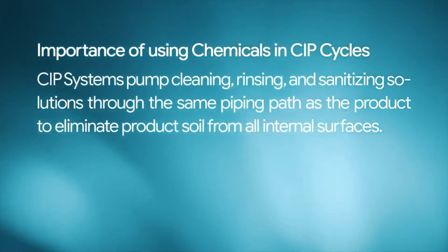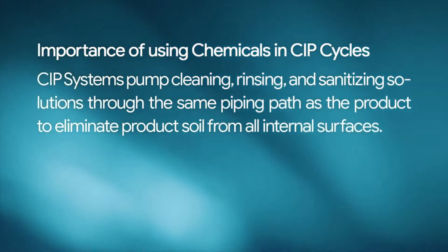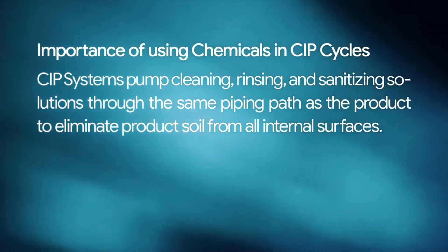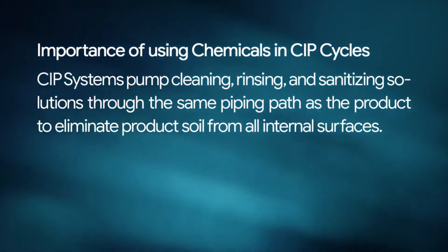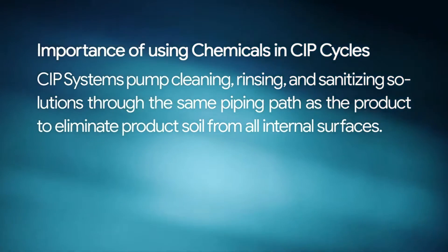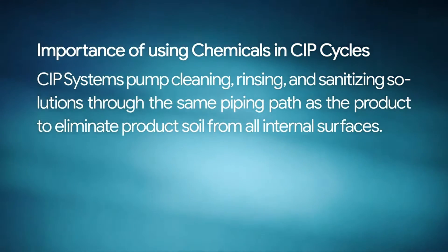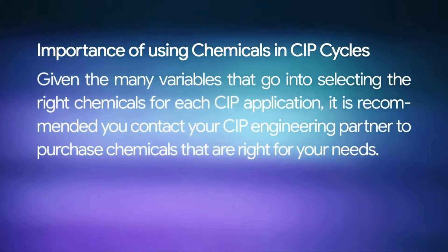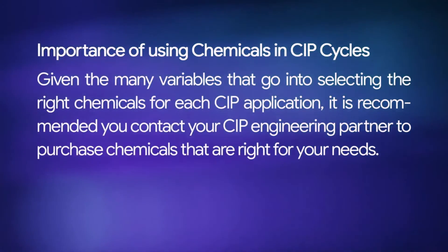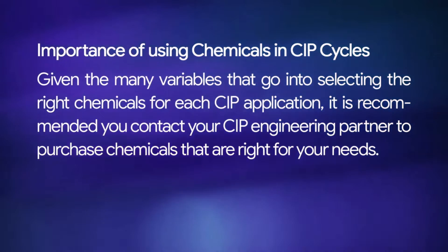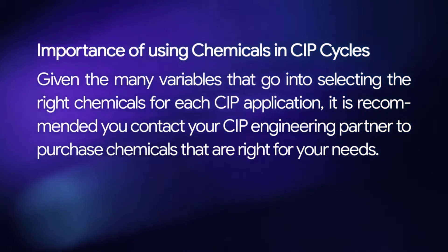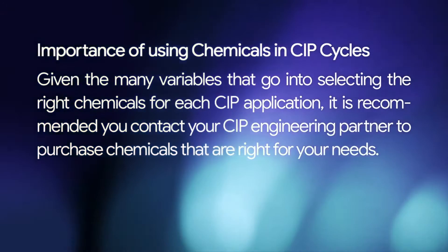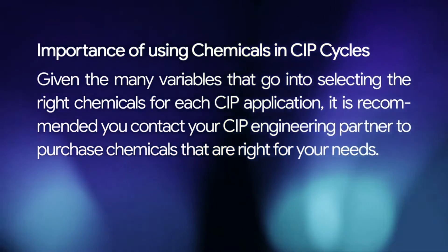Regarding the importance of using chemicals in CIP cycles: CIP systems pump cleaning, rinsing, and sanitizing solutions through the same piping path as the product to eliminate product soil from all internal surfaces. Given the many variables that go into selecting the right chemicals for each CIP application, it is recommended you contact your CIP engineering partner to purchase chemicals that are right for your needs.